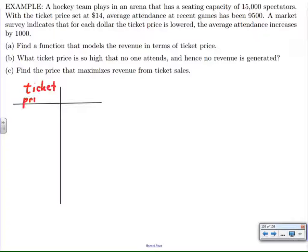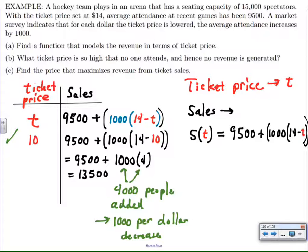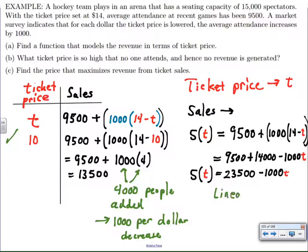Continuing on with the process, I've got all the ticket sales worked out. Just to make sure it's valid, I put in a $10 ticket price and got 13,500 people, and I was able to add 4,000 people total, which is 1,000 per dollar increase. In other words, I know my equation is working the way it's supposed to. The next thing I do is I'm going to clean that equation up by distributing the 1,000 and then collecting like terms. And so now I have a sales function which is a linear function, and we're in a quadratic functions unit, so I don't think I'm done yet.